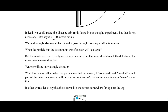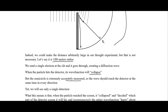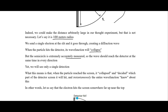When the particle hits the detector, its wave function will collapse. The semicircle is extremely accurately measured, so the wave should reach the detector at the same time in every direction. The wave going in one direction will hit the detector at the exact same time as the wave in another direction, yet we will only see a single detection. This means that when the particle reached the screen, it collapsed and decided which part of the detector screen it would hit, and instantaneously the entire wave function knew about this.